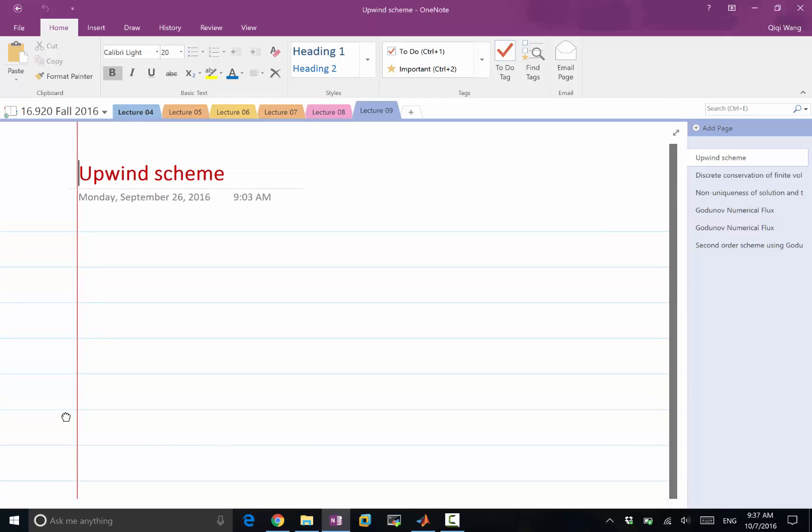So last lecture, we started the general formulation of finite volume schemes. We store the cell averages: ui equals 1 over delta x times the integral from xi minus half to xi plus half of u dx. Remember, the first class citizen in finite volume is now the cell averages and the cells themselves.